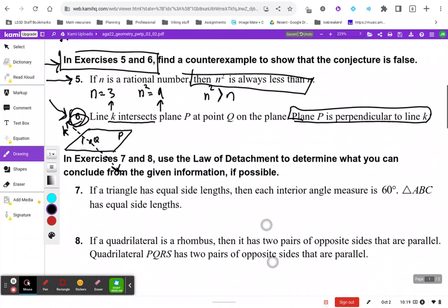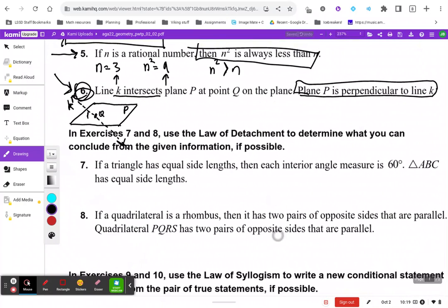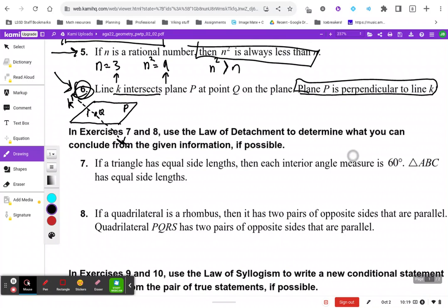Okay team, moving on quickly here to another big deal. We've already talked about inductive reasoning. In exercises 7 and 8, we're going to use what's called deductive reasoning. Inductive reasoning is observing a pattern and making a conjecture.